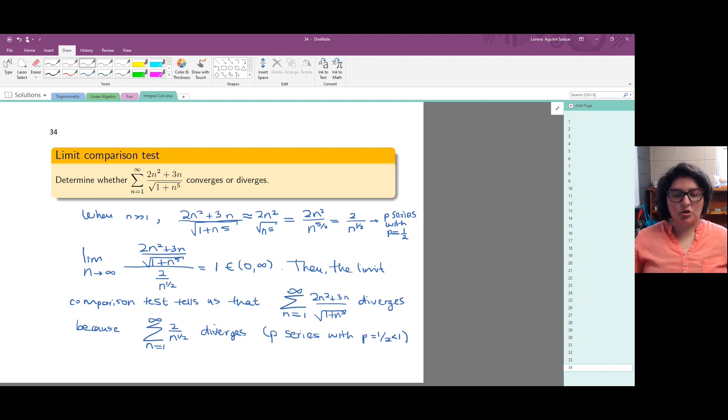Because we have that the summation of 2 over n to the 1 half diverges because that's a p series with p equals 1 half and 1 half is less than 1, then our series diverges.